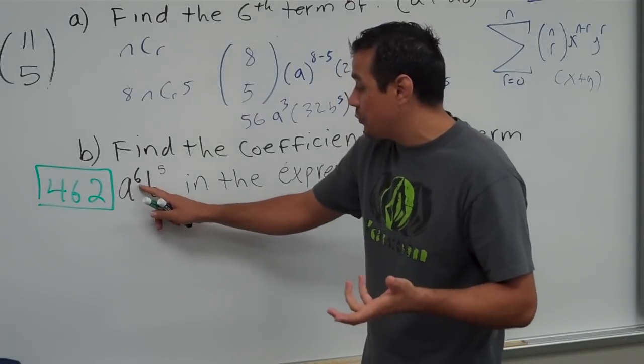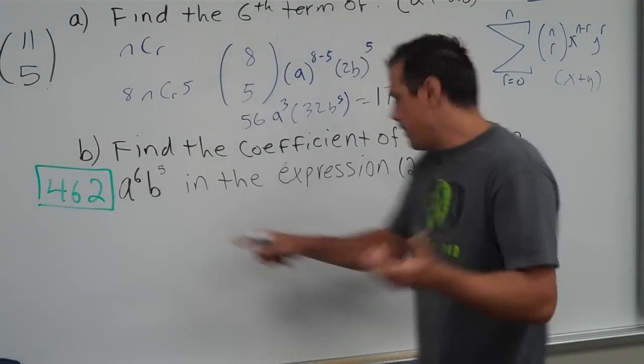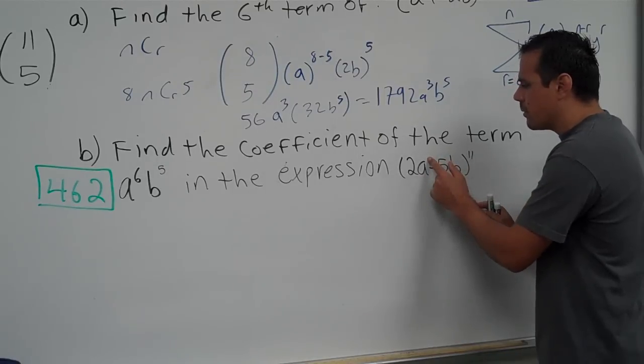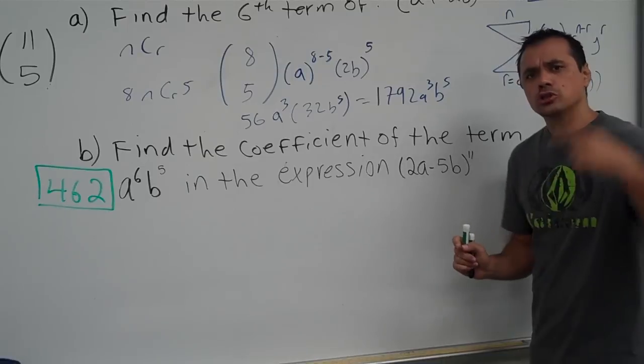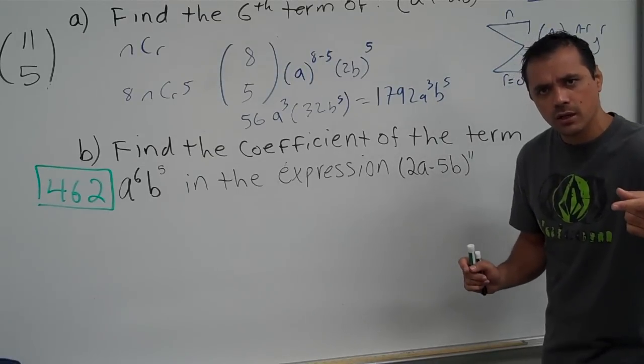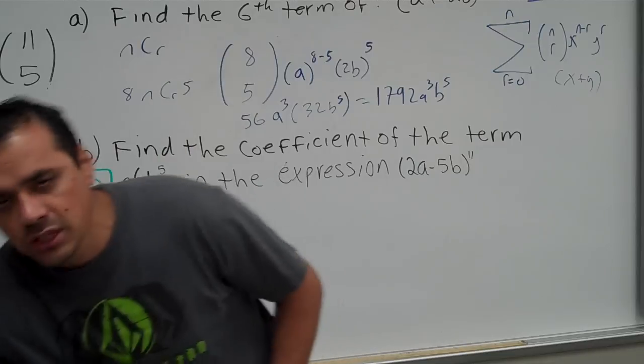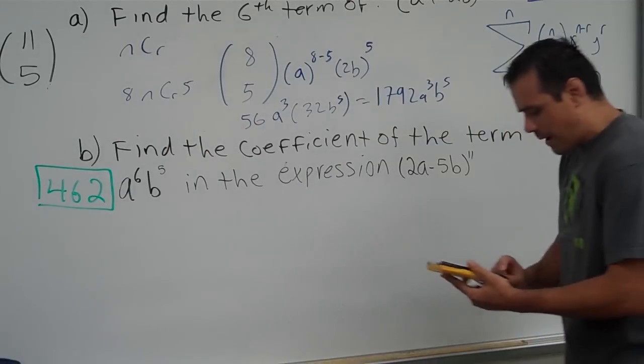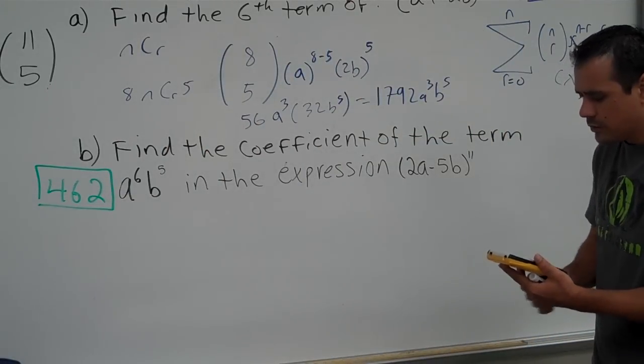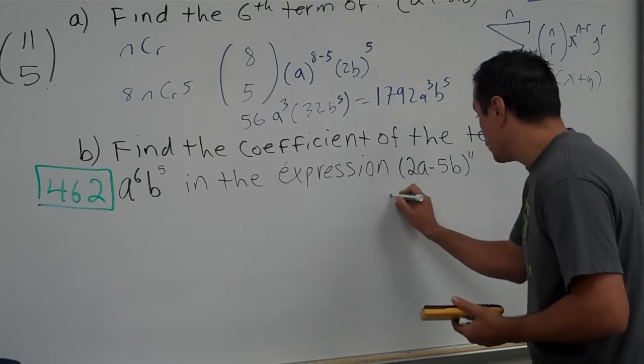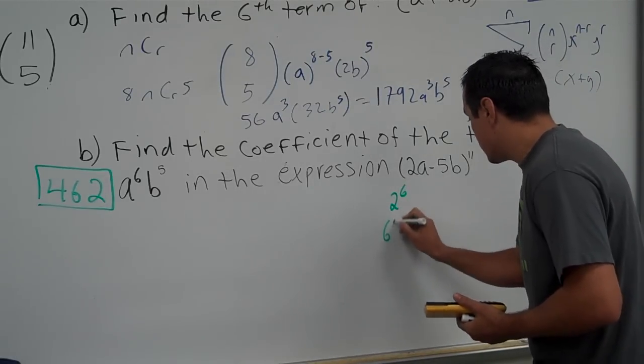So, if we go over here, notice that your A term was actually raised to the sixth power. So, that means that this ended up with a power of 6. Well, if this ended up with a power of 6, that means the 2 must have also ended with a power of, that's right, 6. So, I'm going to grab my calculator, see what that is. 2 to the sixth power. Well, let's see. 2 to the sixth power is actually 64.